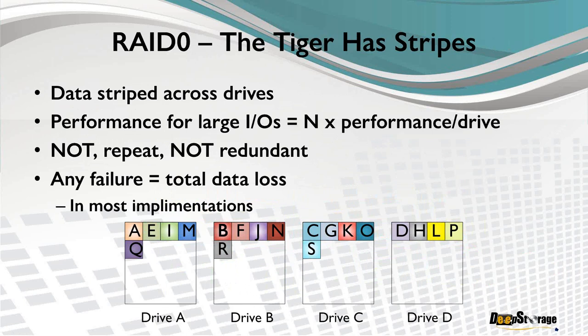The most basic form of RAID isn't in Patterson's paper because it's not redundant — we call that RAID 0. That basically is simply striping data across drives. In a four-drive stripe set, the first strip is written to drive A, the second to drive B, the third to drive C, and so on. By round-robining stripes across multiple drives, we get all head positioners active and aggregate performance that is approximately the number of drives times the performance of a single drive.